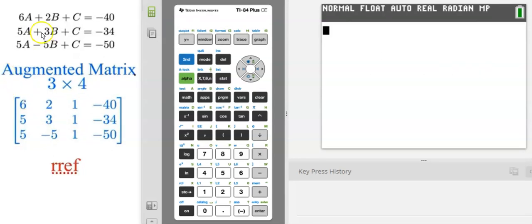We're going to take this system of equations, which I've already converted to an augmented matrix. We're going to enter the augmented matrix into our graphing calculator, the TI-84, and have the calculator convert it to a reduced row echelon form matrix and solve the system for A, B, and C.